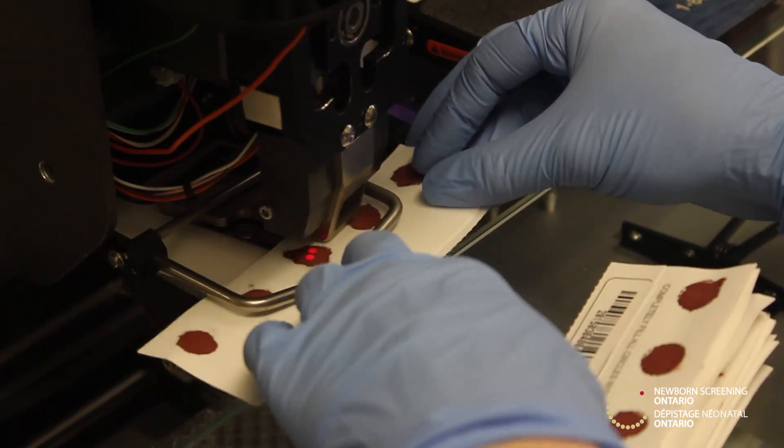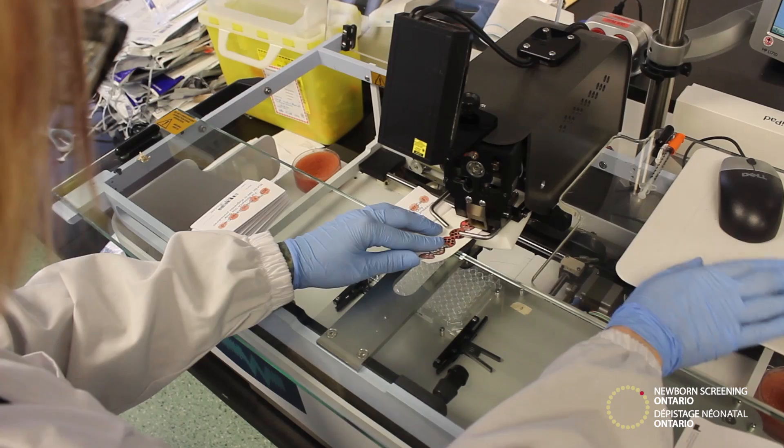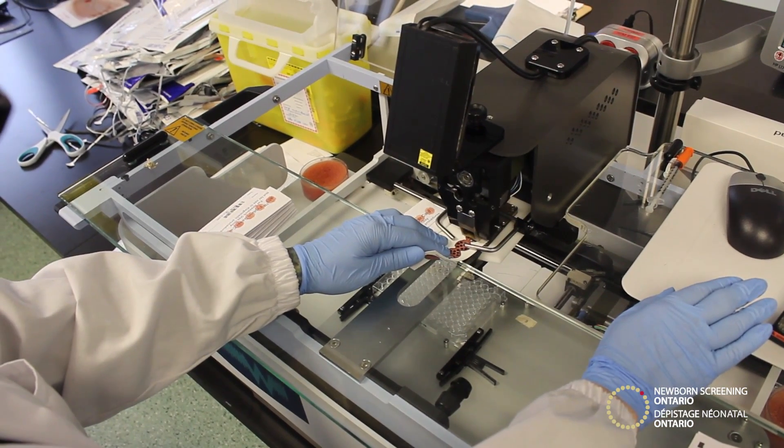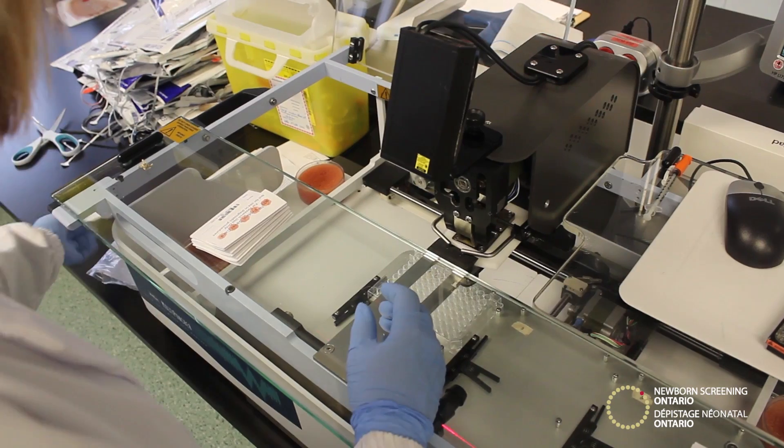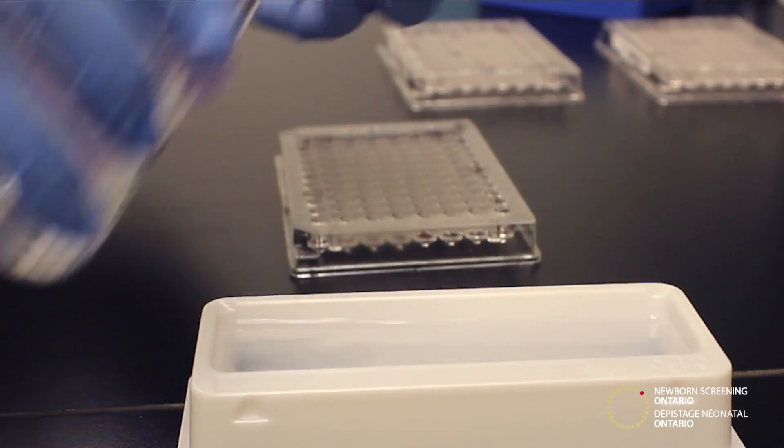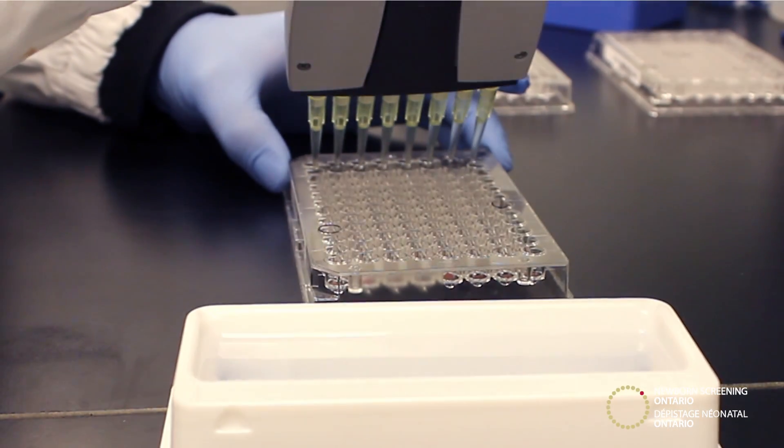Laboratory technicians prepare samples for testing by punching small circles of the blood sample into specialized testing plates that also contain quality control materials. This allows Newborn Screening Ontario to ensure the accuracy and quality of every test. The laboratory technicians and technologists prepare the samples for testing, which can take up to several hours from start to finish.